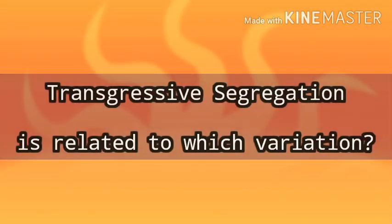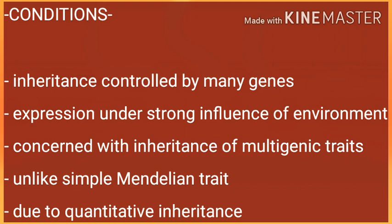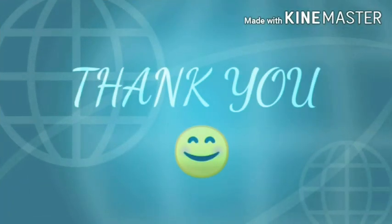Now for the answer: transgressive segregation is related to quantitative variation, because it matches these conditions — inheritance is controlled by several or many genes at different loci that express major phenotypic effects, and its expression is under strong influence of the environment. This inheritance is concerned with multigenic traits, unlike simple Mendelian traits. It results in the formation of extreme phenotypes, and hybrid offspring generally possess traits exceeding those of ancestral species. Clear your doubts in the comment section below, and if you benefited from these lectures, please like, share, and subscribe.